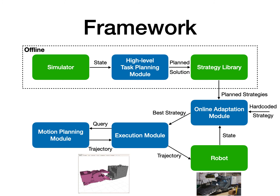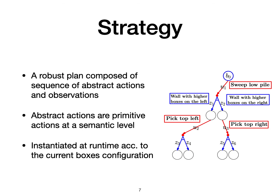Finally, the chosen strategy is instantiated as a motion planning query by our execution module and sent to the motion planning module, which quickly computes the corresponding robot joint trajectory. This trajectory is sent to the robot for execution. In summary, our framework utilizes pre-computed robust plans, adapts them to the current box configuration online, and efficiently computes a plan to execute on the physical robot. Before we dive into each module individually, it is useful to understand the notion of a strategy. A strategy is simply a robust plan composed of abstract actions and observations, represented using a decision tree, which prescribes semantic actions for each possible semantic observation in the outcomes.